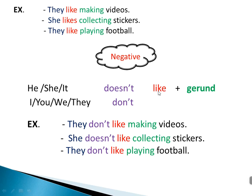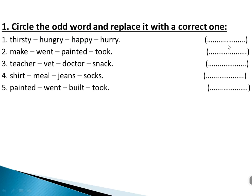After 'don't' and 'doesn't', we can use an infinitive or a gerund. Examples: 'They don't like making videos.' 'She doesn't like collecting stickers.' 'They don't like playing football.'